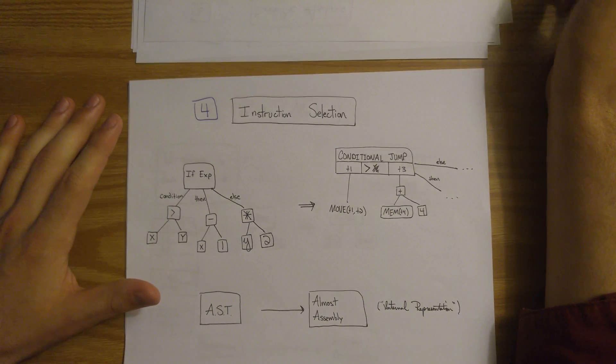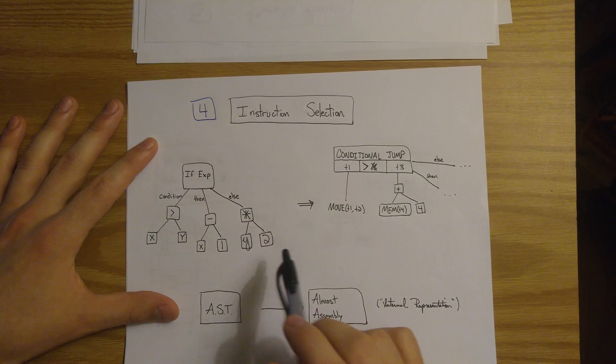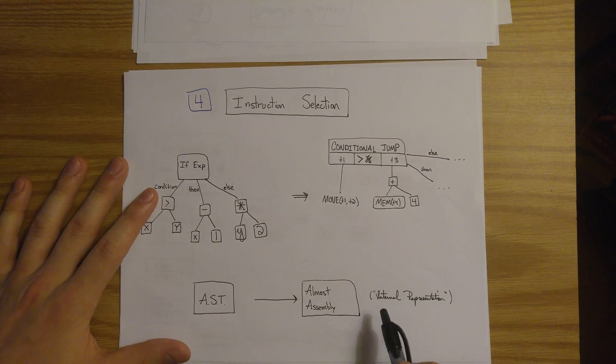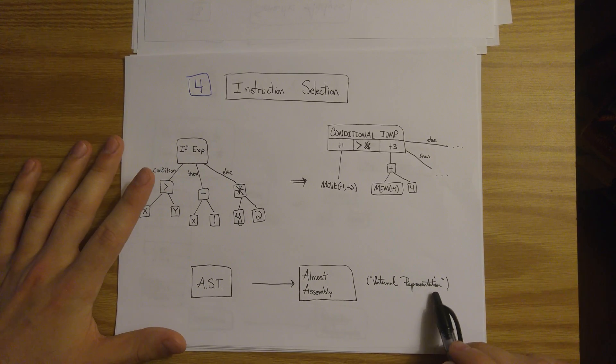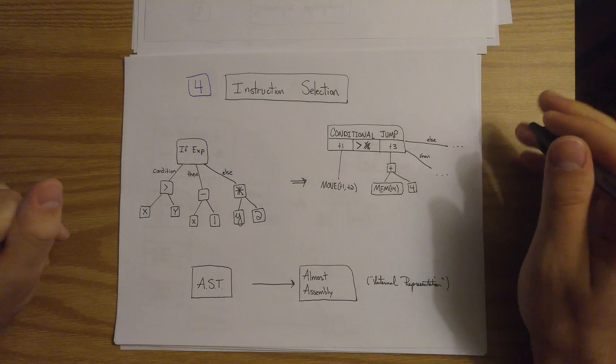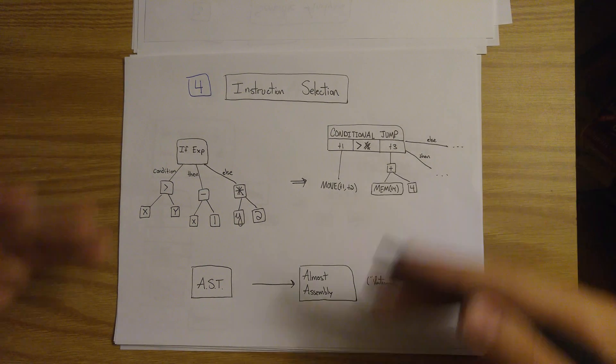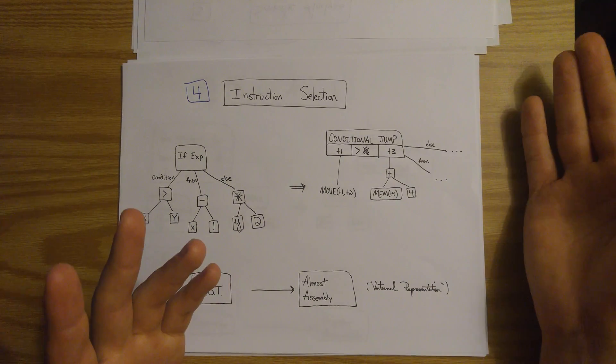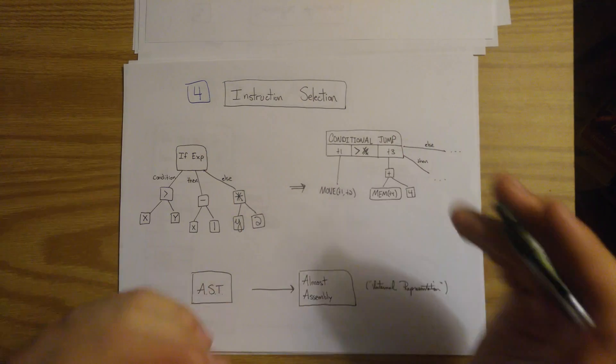The next stage is called instruction selection. So we take our abstract syntax tree and we transform it into another representation that's almost assembly, called internal representation. In internal representation, we pretend that our machine has infinitely many registers, which is not true, but it makes things easier during this stage. So this temporary value is a value that needs to live in a register at some point in time, but we just don't know which register specifically.